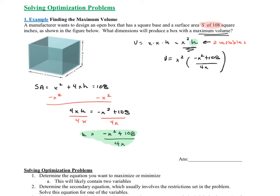I'm going to do some simplifying. One of the x's cancels, and distributing gives me negative one-fourth x cubed plus — 108 divided by 4 is 27 — so this becomes plus 27x. This is my volume function in terms of one variable, and this is the one I'm going to try to maximize.